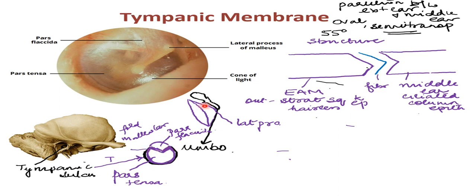The pars tensa forms the majority of the tympanic membrane and vibrates with sound transmission; the pars flaccida forms a smaller part and does not vibrate. Histologically, pars tensa has all three layers, while the pars flaccida lacks the fibrous layer. The tympanic membrane is divided into four quadrants for clinical reference: anterior inferior, anterior superior, posterior superior, and posterior inferior.